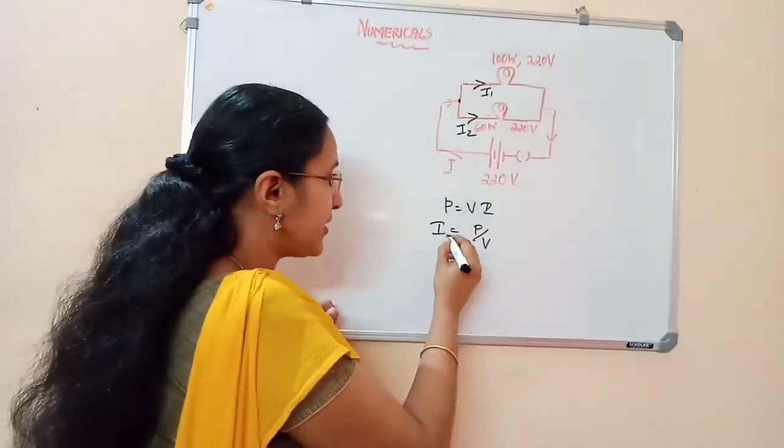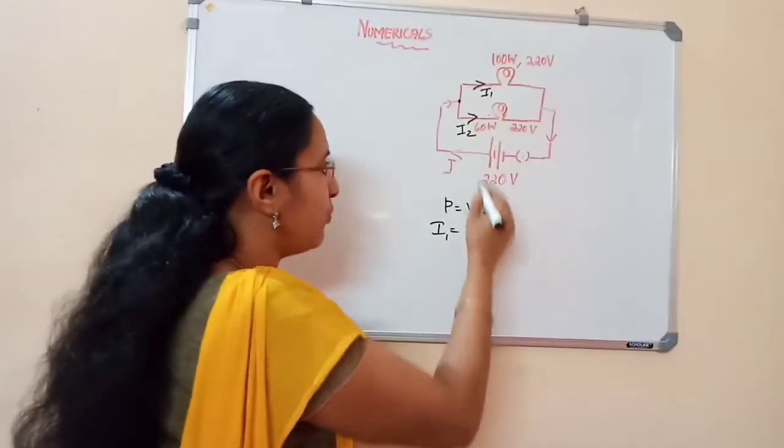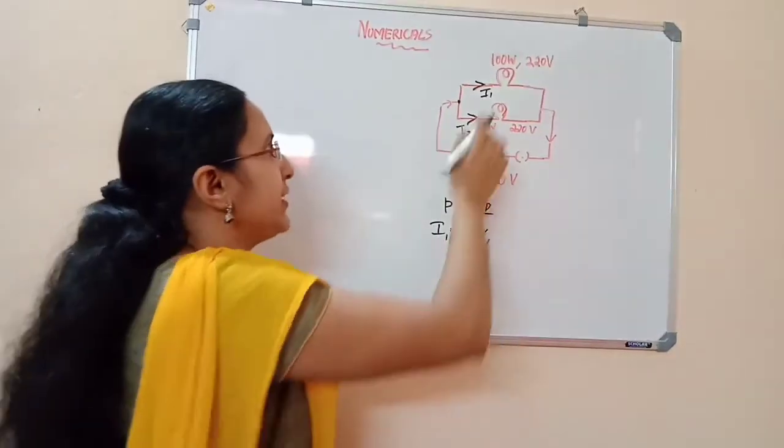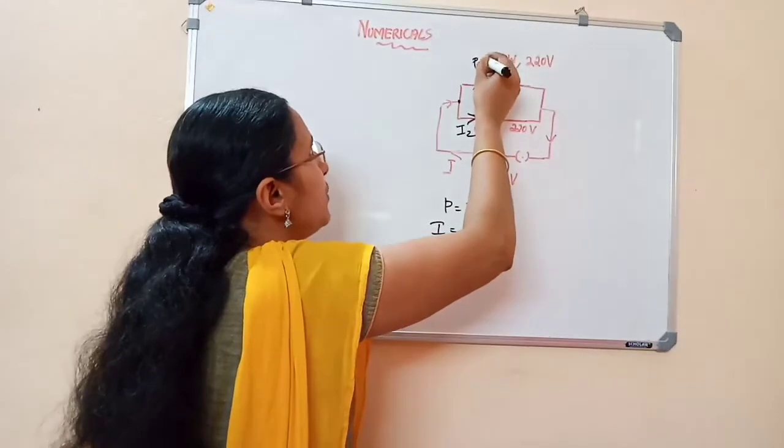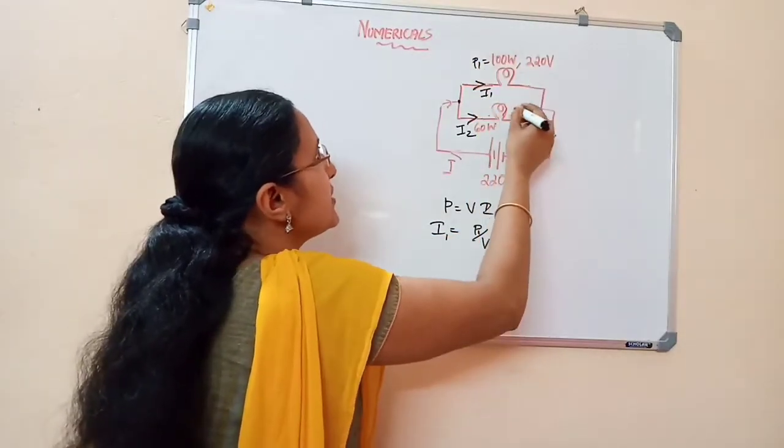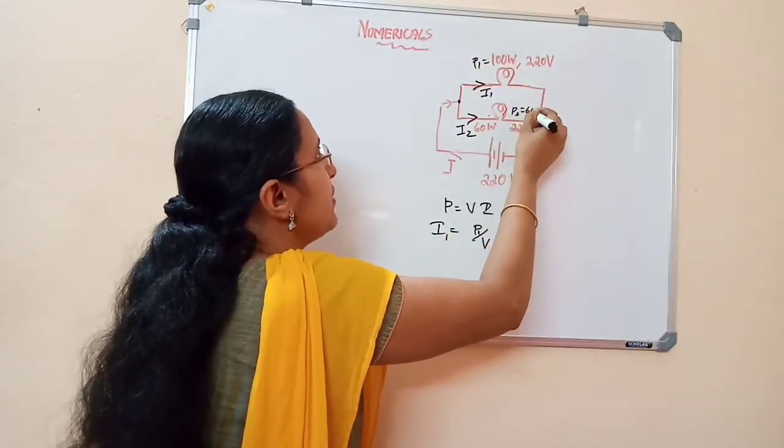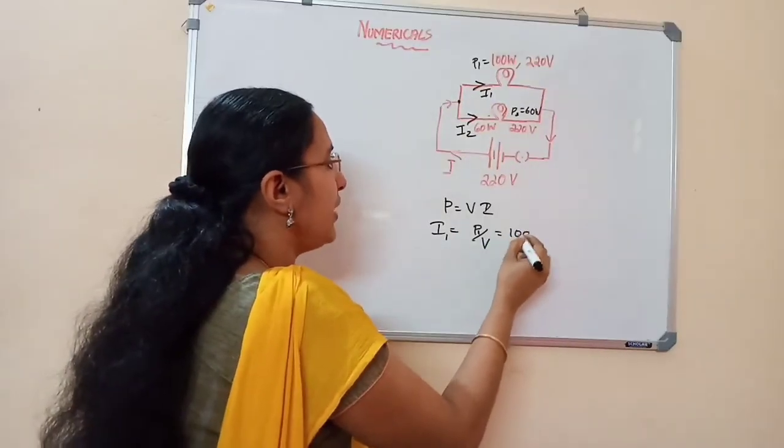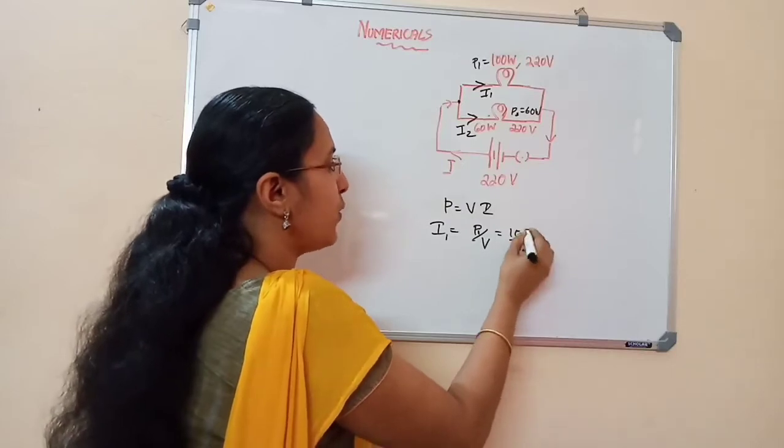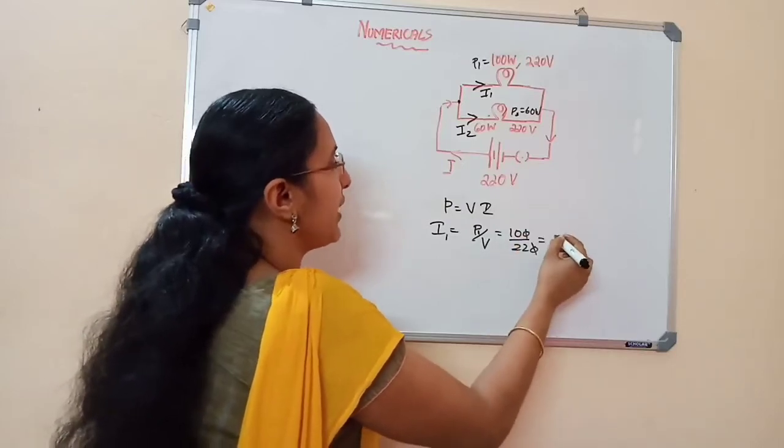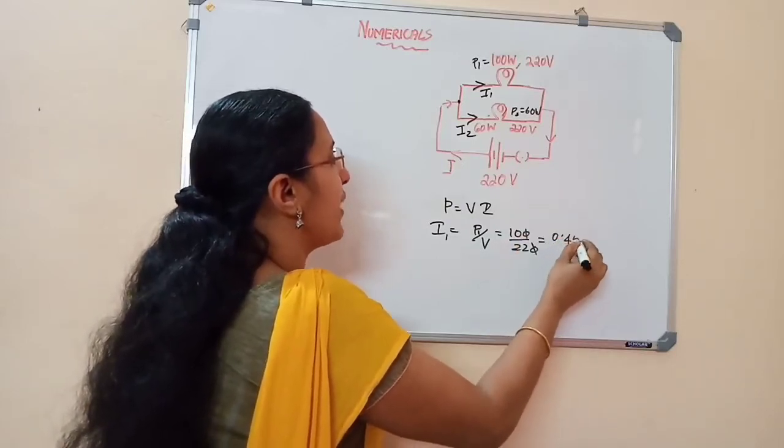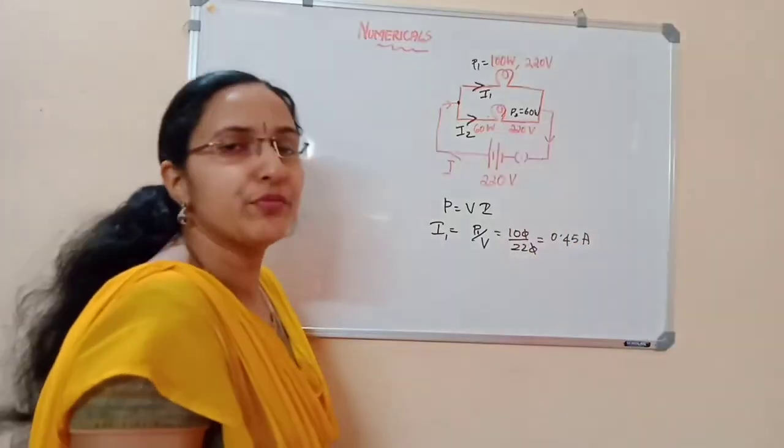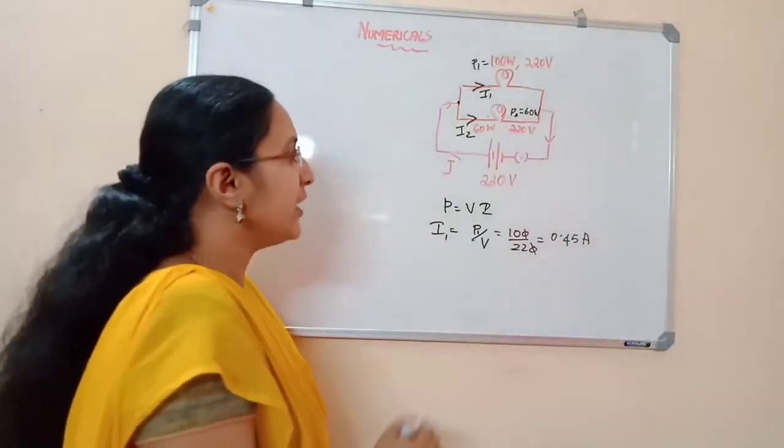i1 is equal to P1 divided by V, which is 220 volt. P1 is equal to 100 watt, and P2 is equal to 60 watt. That is 100 divided by 220—the zeros cancel—you will get 0.45 ampere. So i1 is equal to 0.45 ampere.